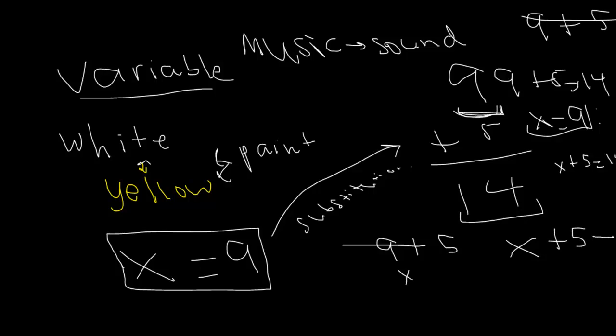So, X plus 5 is going to be, well, I don't know. Since X is the same thing as saying 9, we can basically say now that X plus 5 is like saying 9 plus 5. So, X plus 5 would be 14.